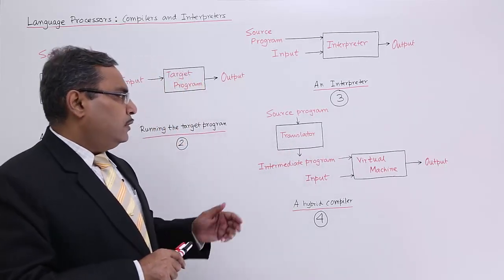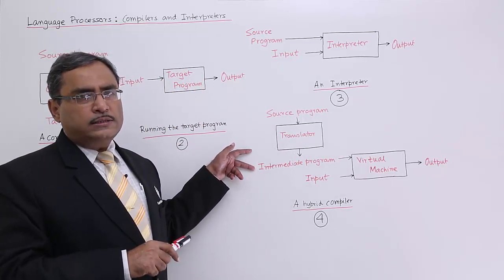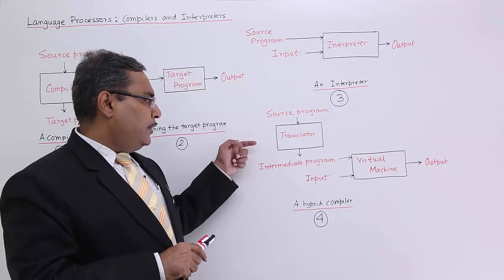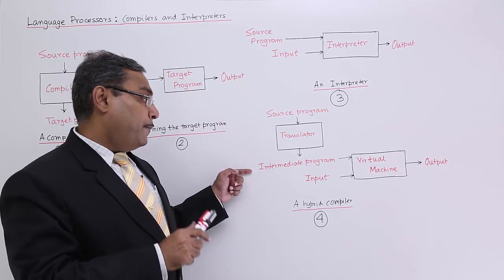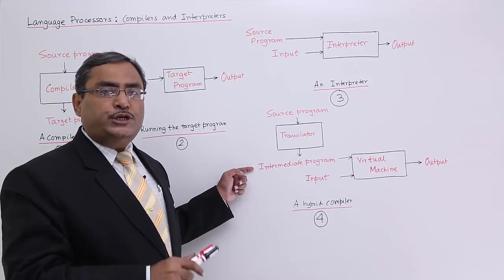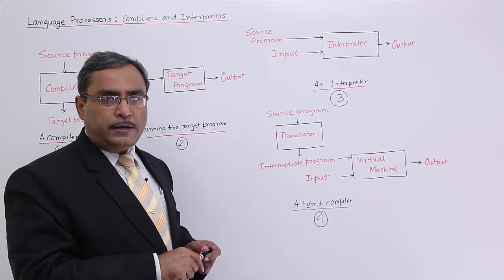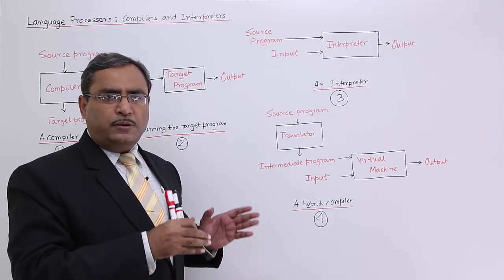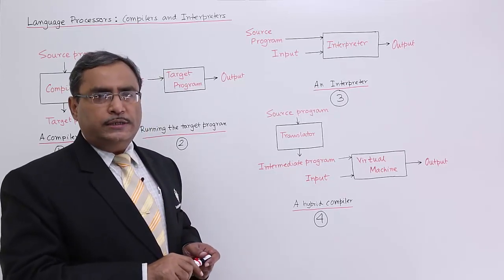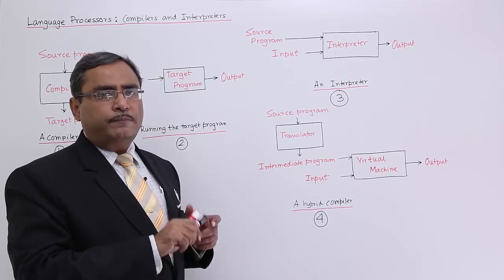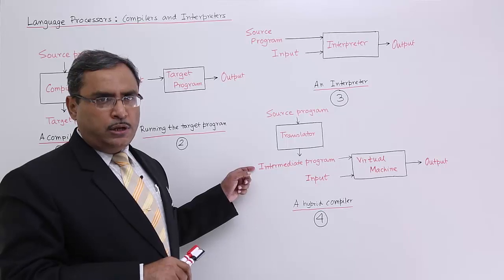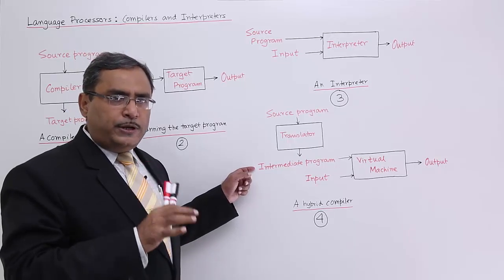Now, consider this particular compiler — it is a special type known as a hybrid compiler. The source program will be taken by the translator and it will produce not a target language program, but an intermediate program. This intermediate program will be totally machine architecture and platform independent. The platform of a computer means the architecture or hardware of the machine and the operating system, which we commonly call the platform. This target program written in the intermediate language is also known as the intermediate program, and it will be totally platform independent.